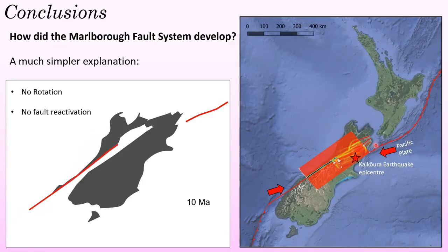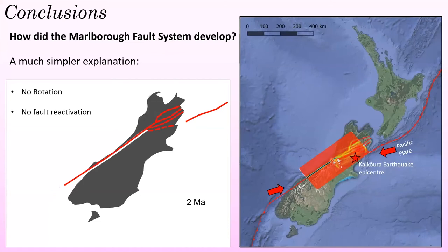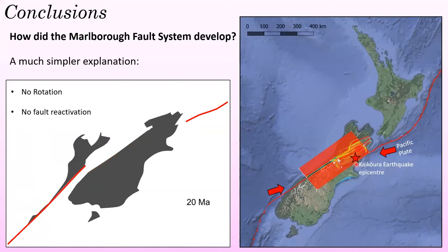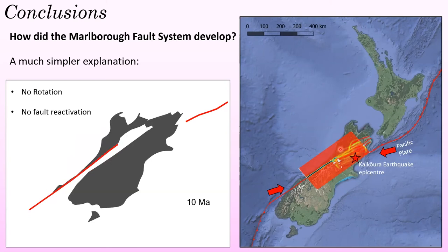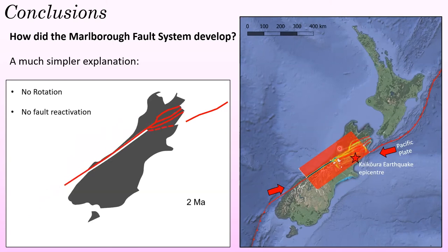What does this mean about how the Marlborough fault system developed? The deformation map is remarkably similar to the faults of the present-day Marlborough fault system, and I was able to generate these faults without the need for any rotation and without the presence of pre-existing weaknesses.